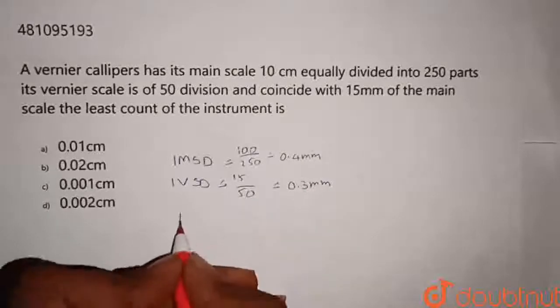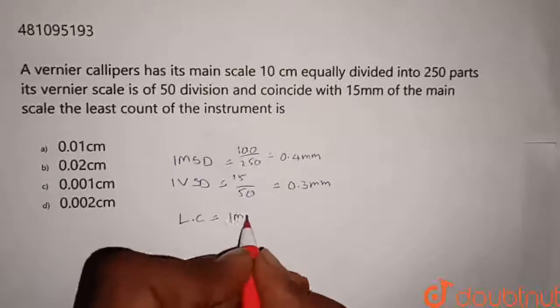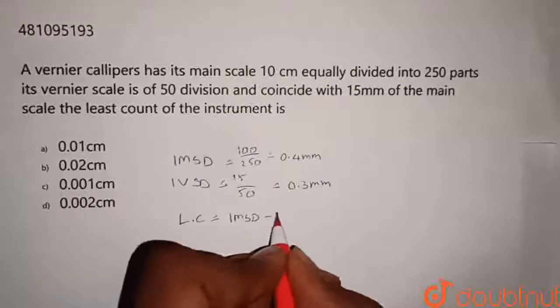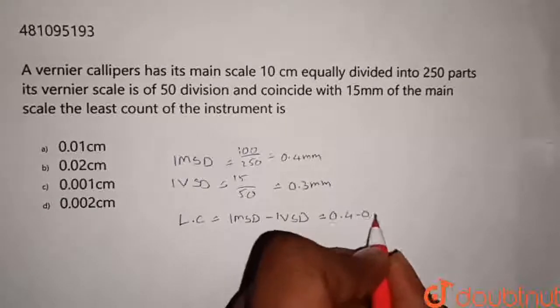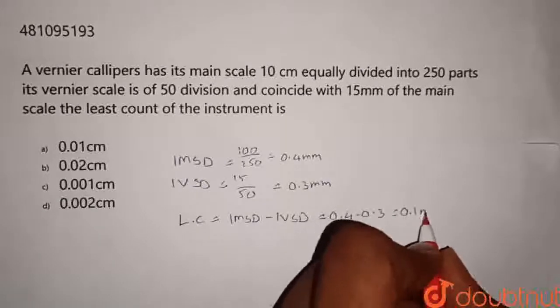As we know least count, LC is equal to 1 EMSD minus 1 VSD. That is equal to 0.4 minus 0.3, that is 0.1 mm.